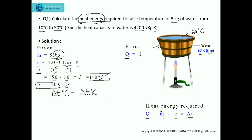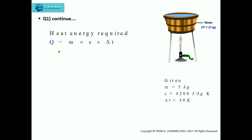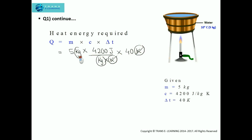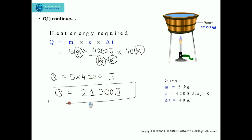We have all three values — mass, specific heat capacity, and the calculated change in temperature. All we need to do is substitute the values to get the required answer. Mass is 5 kg, specific heat capacity is 4200 joules per kg per kelvin, and the change in temperature is 40 kelvin. The kelvin units will cancel out, and the kg units will also cancel out, leaving us with the unit joule, which is the unit for heat. So 5 times 4200 gives us the answer of 21,000 joules. This is the final answer.